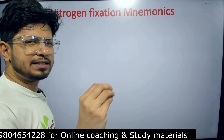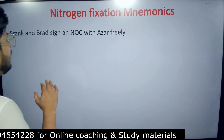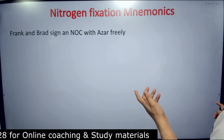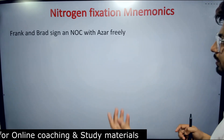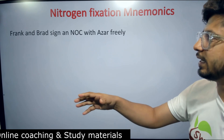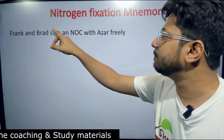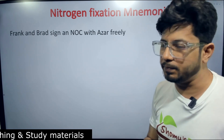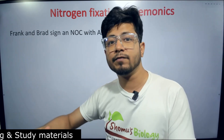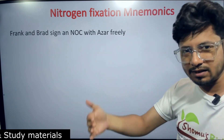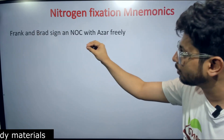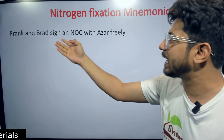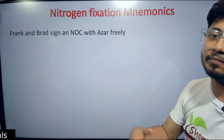For this I need to have a very simple sentence as a mnemonic for you, and this is it. If you remember this sentence then you are going to know about it. We are going to easily find out the name of different bacteria. And here: 'Frank and Brad sign an NOC with Azar freely.' NOC stands for No Objection Certificate. So Frank and Brad sign an NOC with Azar freely.